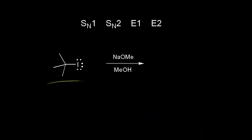Here is another tertiary substrate, so SN2 is out. The reagent is sodium methoxide — sodium has a plus one charge, and oxygen has a negative one formal charge. The methoxide ion is a strong nucleophile and a strong base, and whenever you have a strong base, think E2 reaction. So the E2 reaction is going to dominate here.